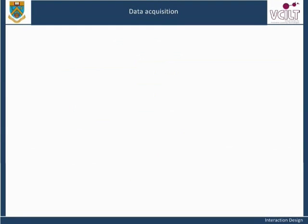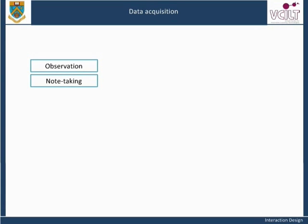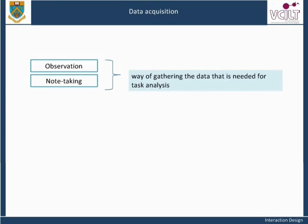In the scenarios above, we talked about going into Linden's and Remy's offices and observing them. Implicitly, while observing them, we were also taking notes about their activities that could be used later for analysis. Observation, note-taking, or even video recording are one way of gathering the data that is needed for task analysis.